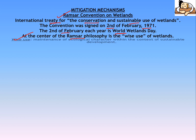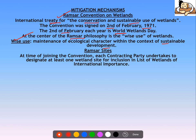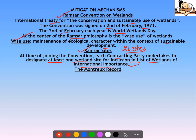At the center of Ramsar philosophy is the 'wise use' of wetlands — maintaining the ecological character of the wetland, and if you utilize ecosystem services, it has to be within the context of sustainable development. Under the Ramsar Convention, we have Ramsar sites. At the joining of the convention, each contracting party undertakes to designate at least one wetland site for inclusion in the list of wetlands of international importance — this list is what is known as a Ramsar site. India has 26 Ramsar sites, and you should remember which state each is in, as questions can ask you to arrange them from north to south or west to east.